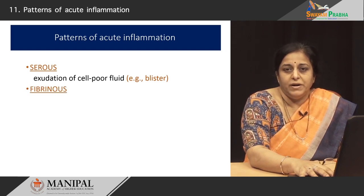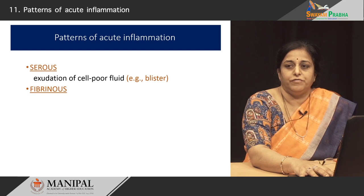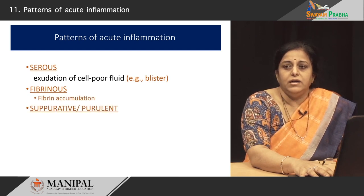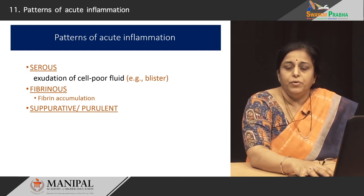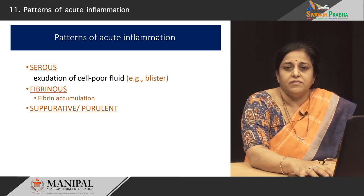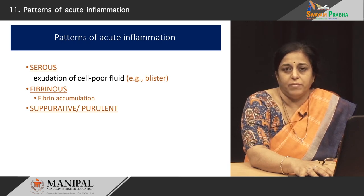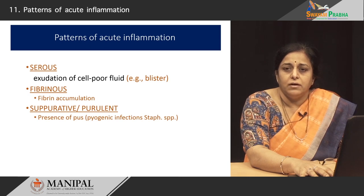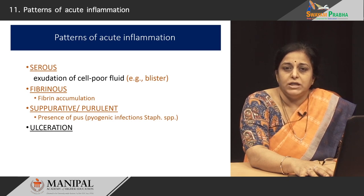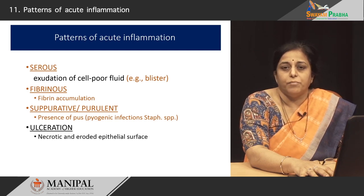The second type of inflammatory reaction is fibrinous. As the name suggests, there is a lot of fibrin deposition at the site of inflammation, and this is particularly seen in cavities like the pericardial cavity, which we will see in the next slide. The third type is suppurative or purulent inflammation — this is the classical morphological appearance of infection, particularly with pyogenic or destructive microorganisms, and what you get at the site is pus. The fourth type is ulceration: because of the injury, the epithelial surface may get denuded or eroded, resulting in the formation of an ulcer.